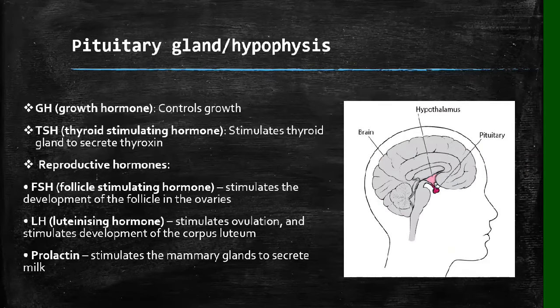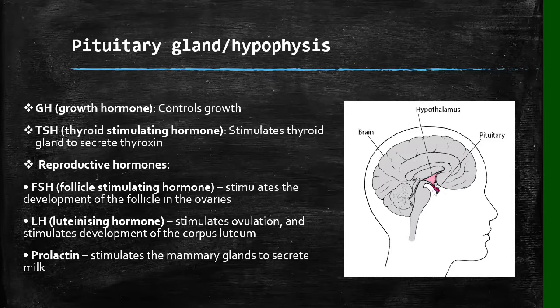Moving along, we also have the pituitary gland, also called the hypophysis. As you can see on the diagram, it is the pinkish part at the base of the brain, below the hypothalamus. Most of our hormones come from the hypothalamus and then go to the pituitary gland where they are released. The pituitary gland releases the growth hormone, thyroid stimulating hormone, and the reproductive hormones — the follicle stimulating hormone, the luteinizing hormone, and prolactin.